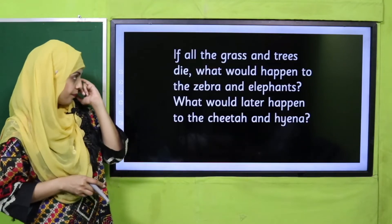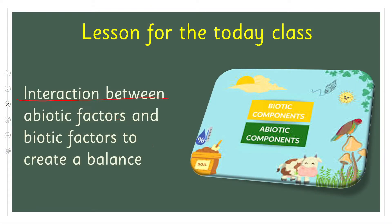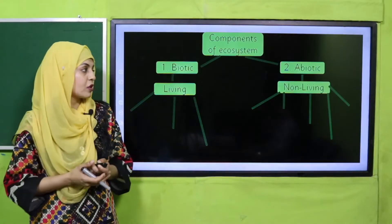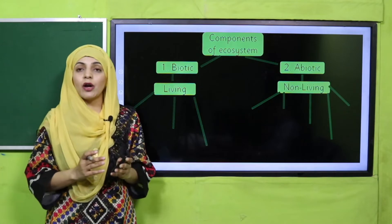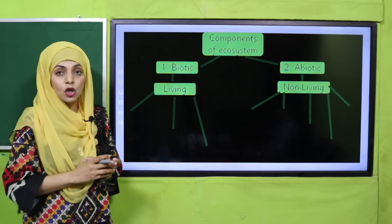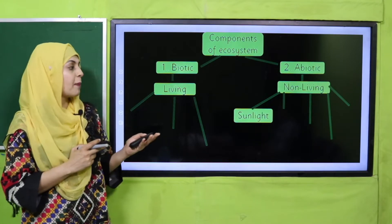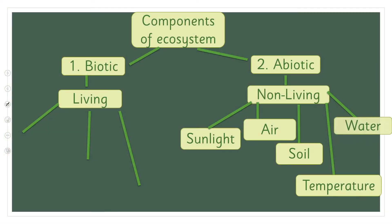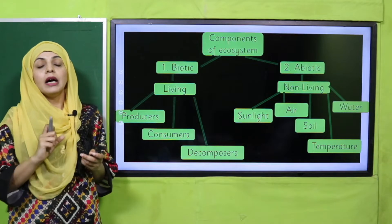In today's lesson we will discuss the interaction between abiotic and biotic factors and the balance between them — how balance is created between biotic and abiotic factors. Components of an ecosystem are biotic and abiotic factors. Biotic factors are living, and abiotic factors are non-living. The abiotic or non-living components include sunlight, air, soil, temperature, and water. The biotic factors include consumers, decomposers, and producers — these are the living factors of an ecosystem.